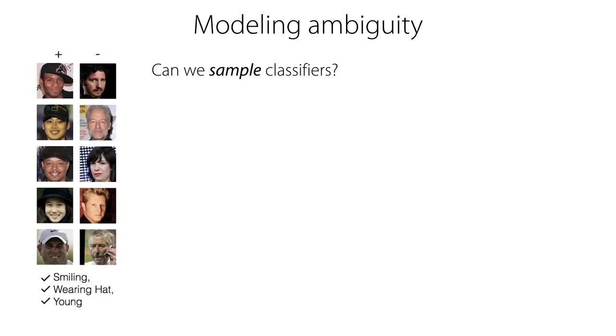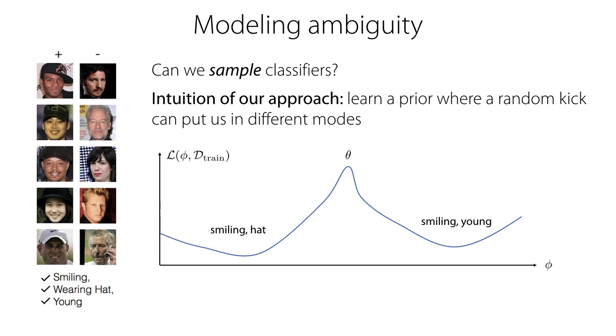We instead want to sample potential classifiers that represent hypotheses about the underlying function. The intuition behind our approach is to learn initialization such that a random kick through learned additive noise followed by gradient descent can effectively sample a possible solution, such as a classifier that distinguishes two particular attributes.